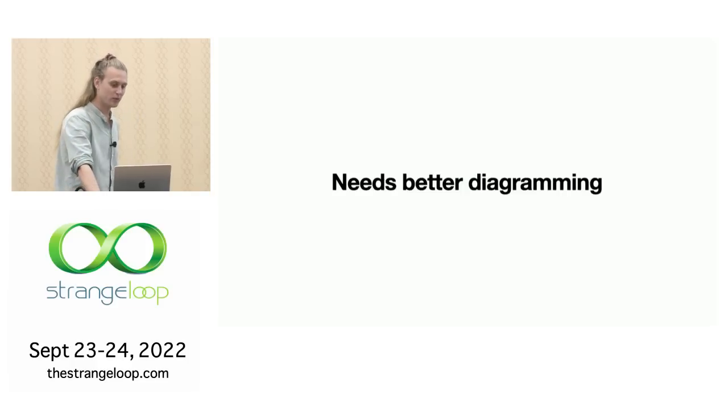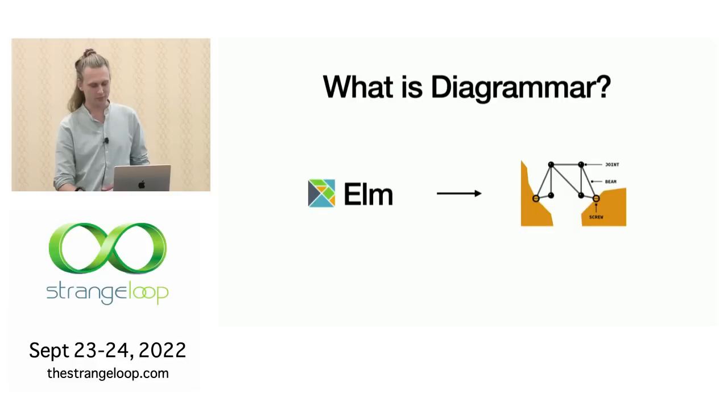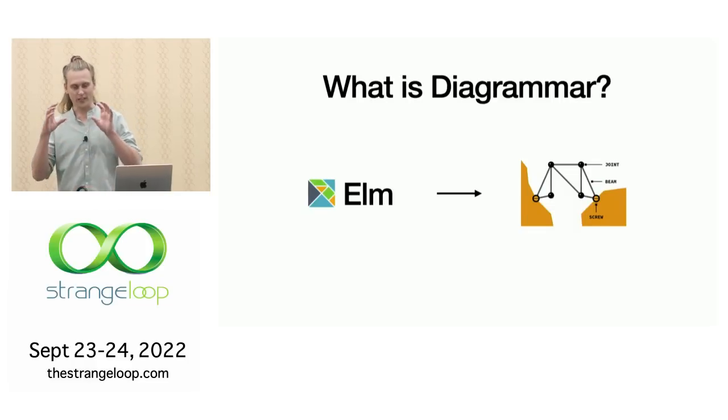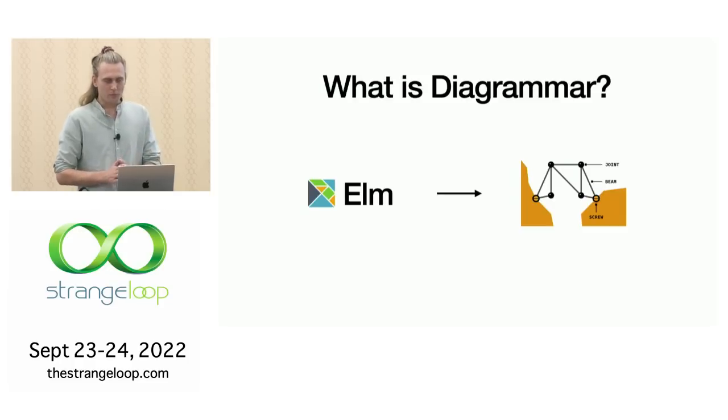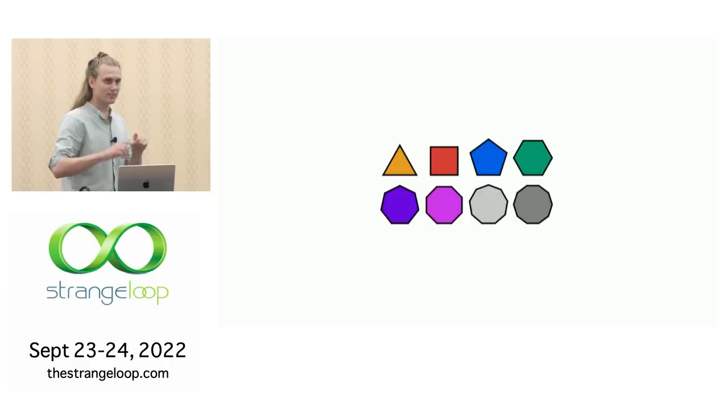So it was clear that there was a need for better diagramming. And this is where Diagrammer comes in. What is Diagrammer? It is a tool where you write Elm code and we generate a diagram. Quite simple. Next, I'm going to give you a quick tour and make this simple geometric diagram to give you a feel for what it's like. It's Strange Loop, we have to have some code in the talk.